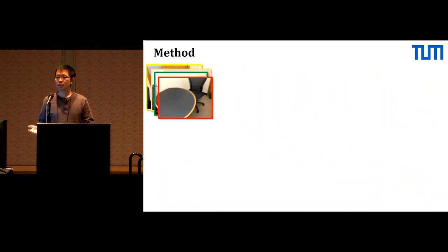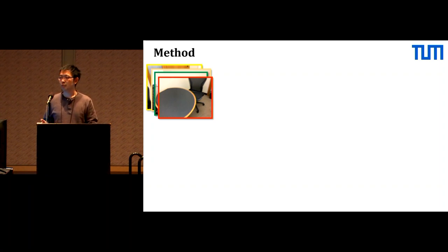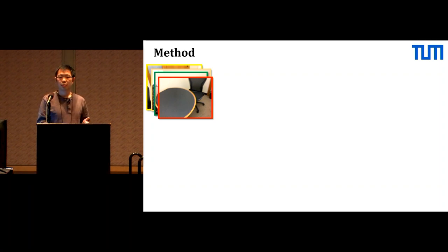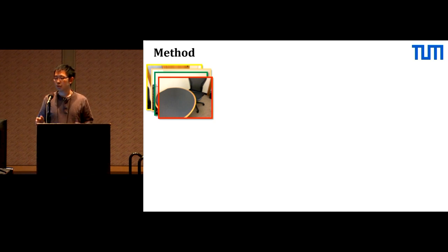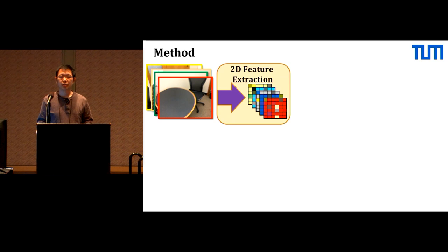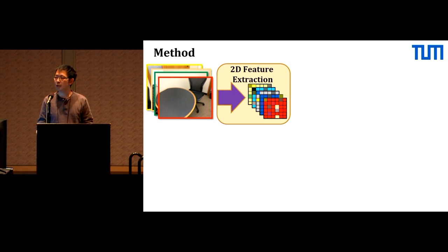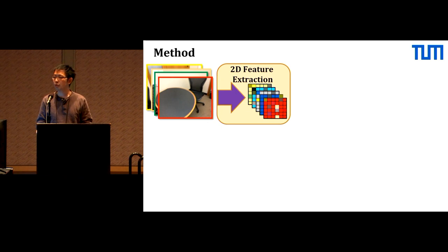One significant challenge in jointly using color and geometry information is the resolution mismatch between pixels and voxels. To tackle this problem, we run a series of 2D convolutions on each image. This spatially compresses the RGB input, which we can then back-project into a 3D grid.